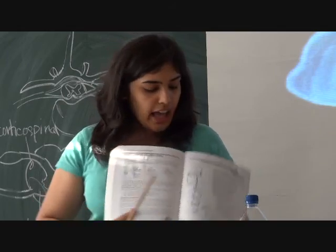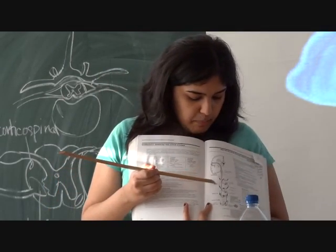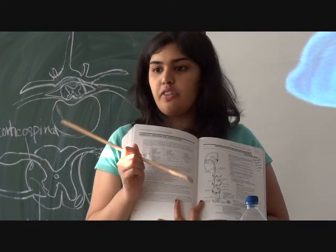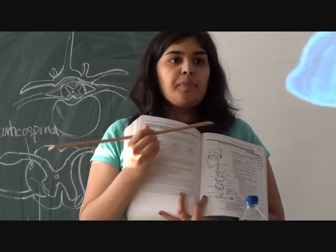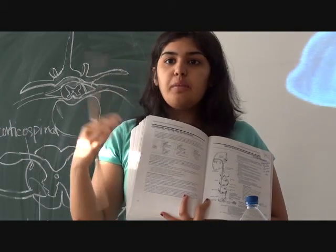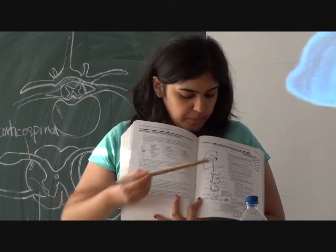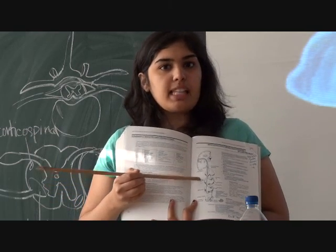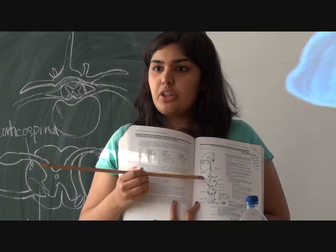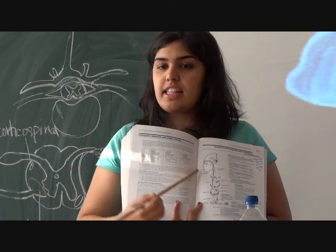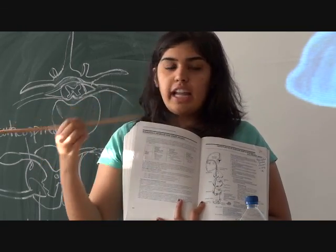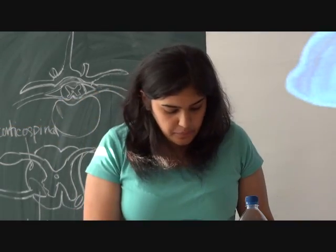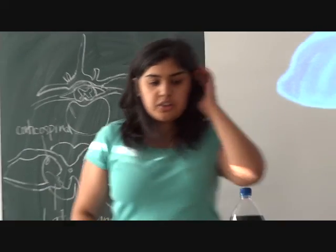That is the corticospinal tract. As it passes through the pons and the medulla, which also have nuclei of the cranial nerves, some cranial nerves are also involved in motor function. So the corticospinal tract supplies some fibers to the nuclei of the cranial nerves — that is how the motor function of the cranial nerves takes place. Now, sensory.